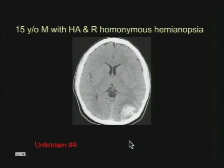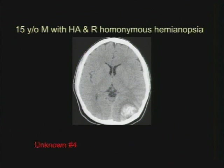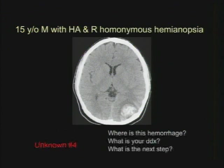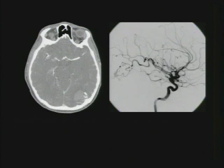The fourth unknown case is a 15-year-old who presents with headache and right homonymous hemianopsia. First you see the cause of the hemianopsia — a lesion in the left occipital lobe, a parenchymal hemorrhage in a child. The differential again: look for underlying vascular abnormality such as AVM or cavernoma, underlying tumor, and remember dural venous sinus thrombosis. Here's the CT angiogram where you see an abnormal cluster of vessels, and the conventional angiogram.